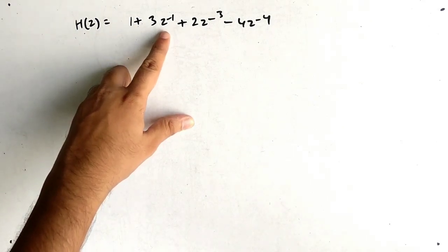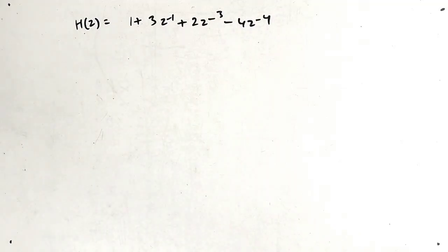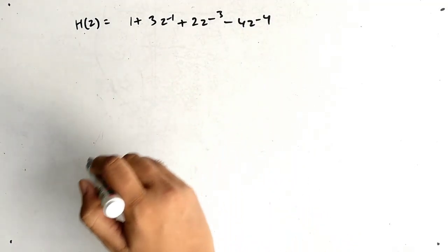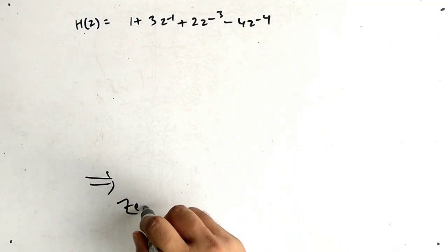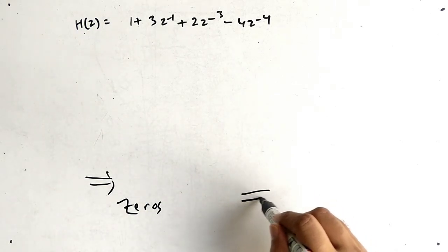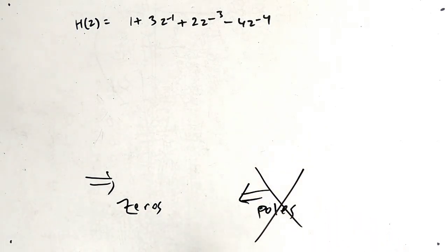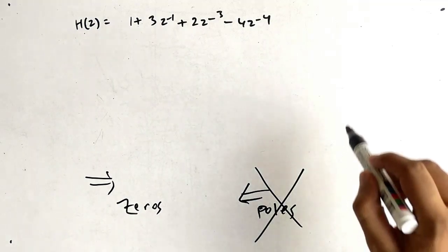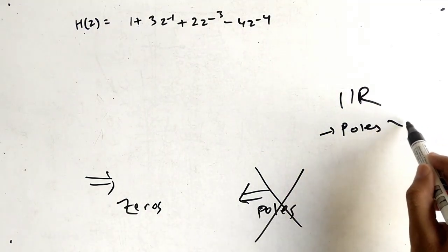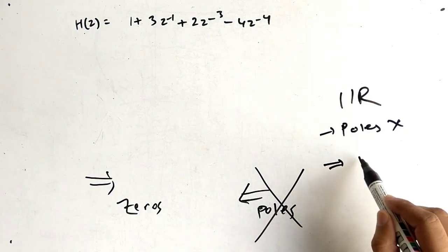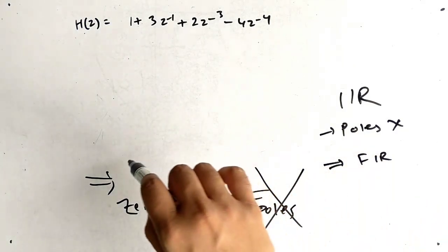H(z) = 1 + 3z⁻¹ + 2z⁻³ − 4z⁻⁴. According to our approach, zeros go in one direction and poles in the other. If we remove the pole part from IIR, we are left with FIR. So this is FIR.